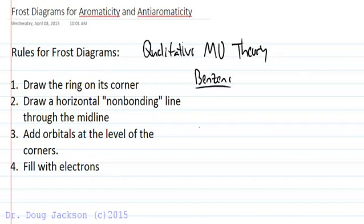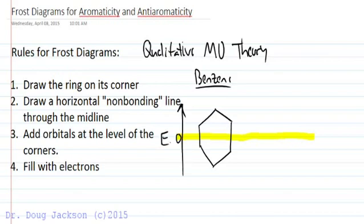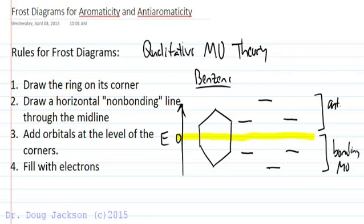You draw the ring on its corner as symmetrically as you can, and then draw a horizontal non-bonding line through the middle. So this is our non-bonding line, zero energy for example. So this would be our zero line for energy axis. And we put our orbitals on the corners where the corners are. Anything below the zero energy line is a bonding molecular orbital. Anything above is an anti-bonding in the Frost diagram.